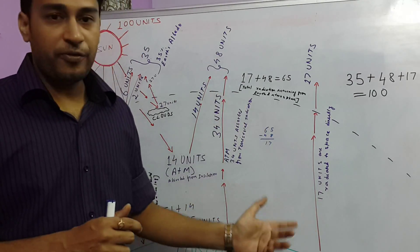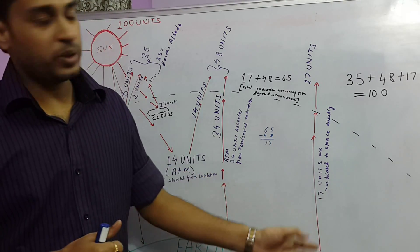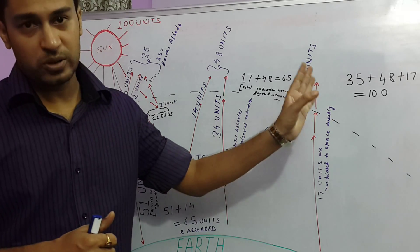Now out of the remaining units which would now be 17, these 17 units are directly sent back to the space.